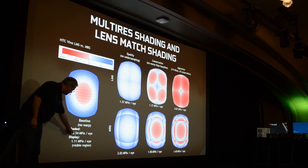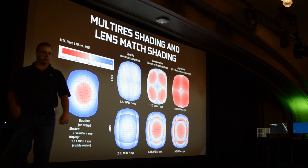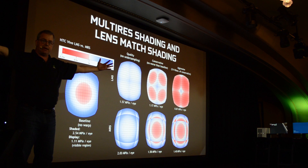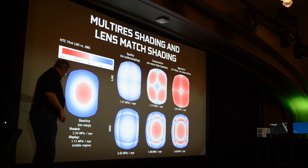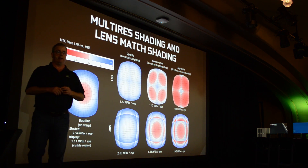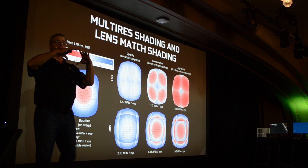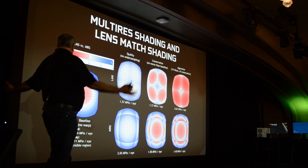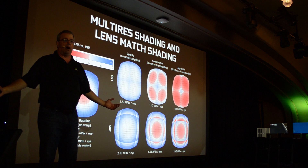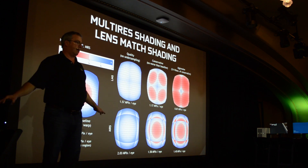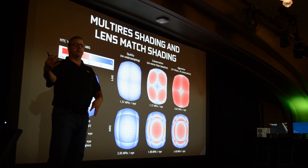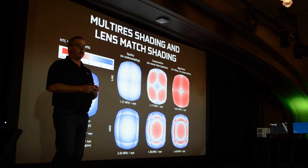We actually had to render 2.5 megapixels per eye if you did nothing. Render 2.5 megapixels per eye, but we actually only show you 1.1 megapixels per eye because of that distortion. So somewhere around half the pixels are wasted in normal VR — this is using a Vive, by the way; Oculus is slightly different, but you get the order of magnitude.